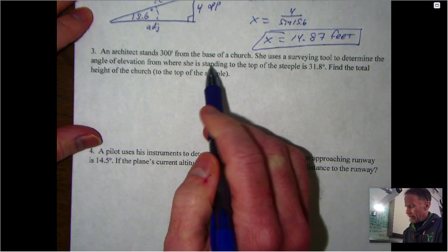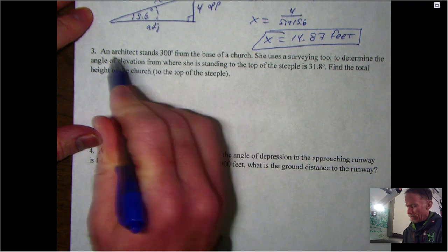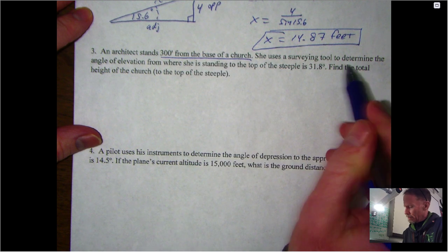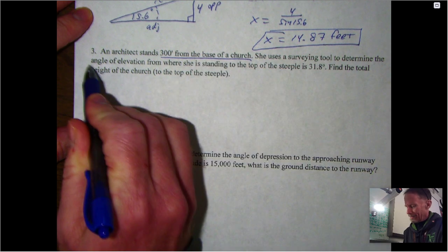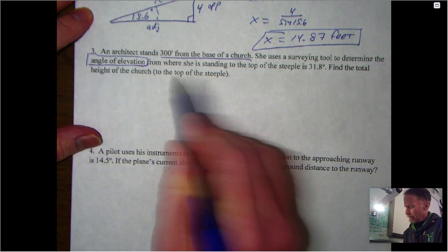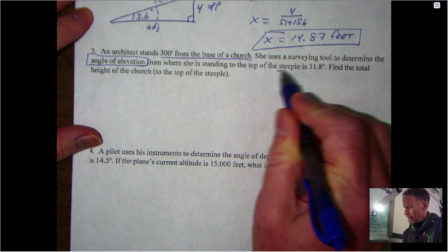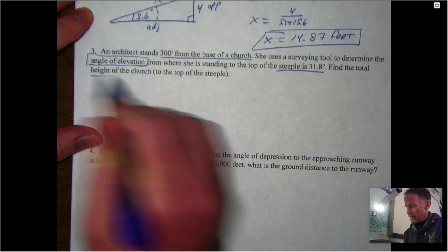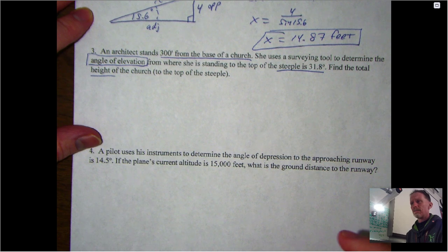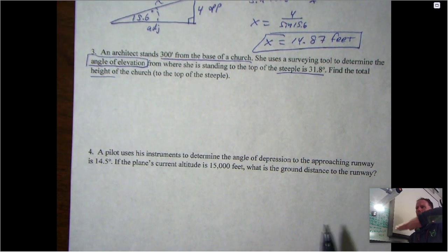If you look at number three, we got an architect standing 300 feet from the base of a church. She uses a surveying tool to determine the angle of elevation - this term right here.